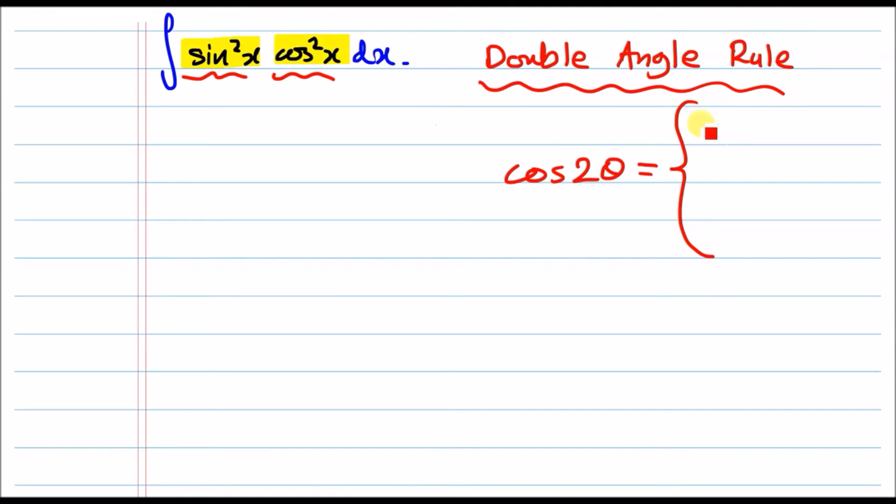So before we go ahead and solve this integral, I'm going to go ahead and explain the double angle rule. So the double angle rule is written as cos 2 theta, and it can be written in three different representations.